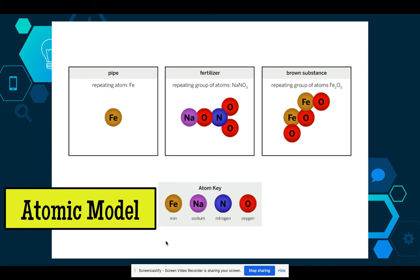The fertilizer in the middle there is a repeating group of atoms. And the brown substance is also a repeating group of atoms, and it looks like it's different atoms.